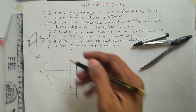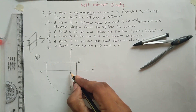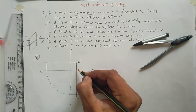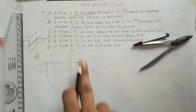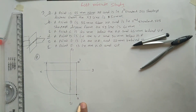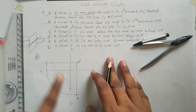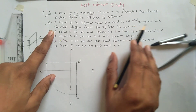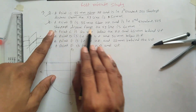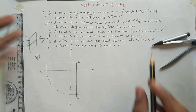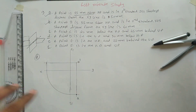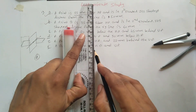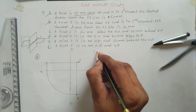So this is the shortest distance of 50mm, this is the 15mm, and this you got from the solution. Problem B is similar — point B is 35mm above HP and its shortest distance from the XY line is 60mm, so you have to do it on your own. Now, problem number C.